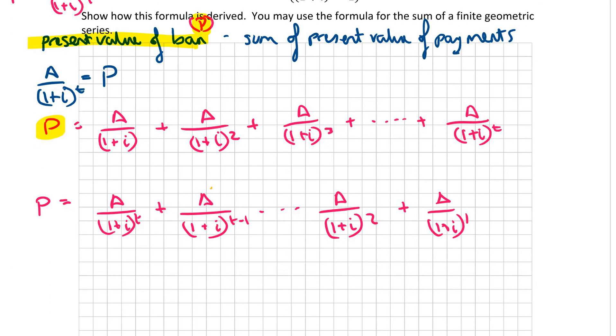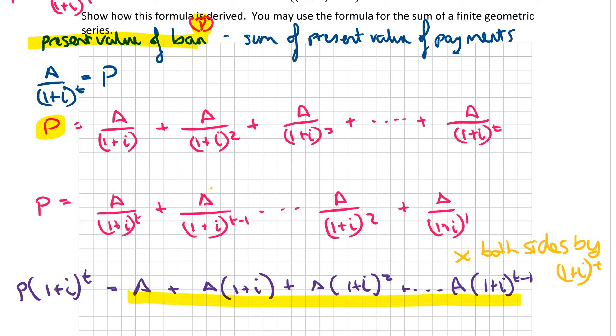Now what I'm going to do here, I'm going to multiply both sides by 1 plus I to the T. So I'm going to get rid of my denominators essentially on the right hand side. If I multiply the left hand side by 1 plus I to the T, I'm left with P times 1 plus I to the power of T is equal to A plus A over 1 plus I plus A over 1 plus I squared, all the way up to A over 1 plus I to the T minus 1. So now hopefully what you'll see is this part here becomes a geometric sequence.